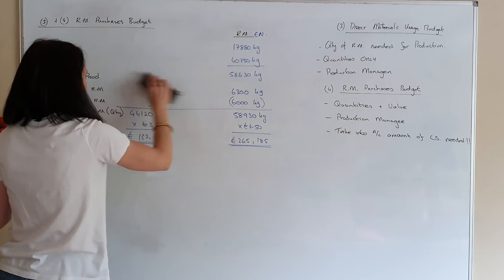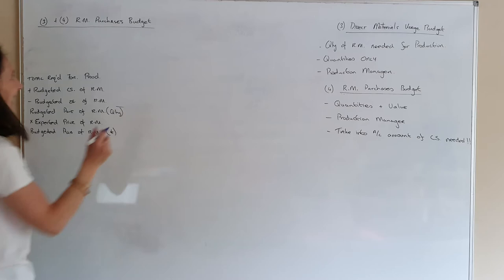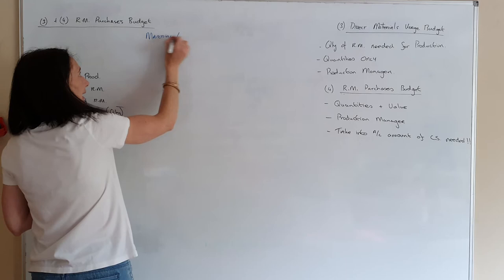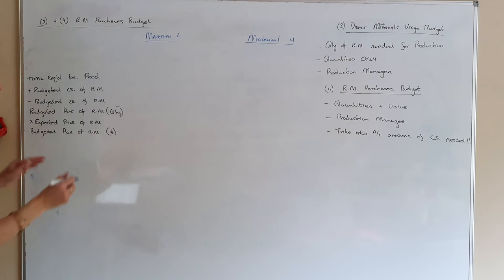This is Donkey Limited, page 561. Their raw materials are material L and material U. Donkey are making two types of products.